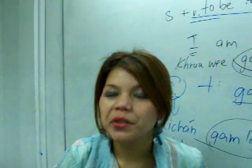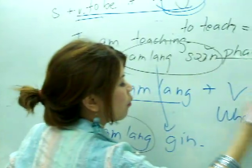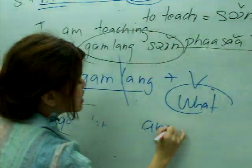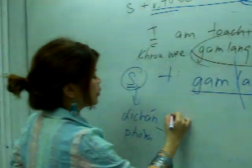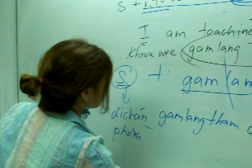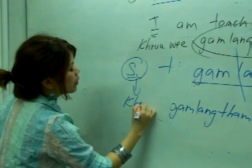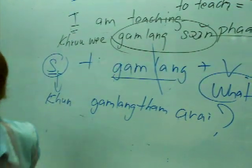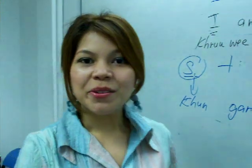Now for a question: 'What are you doing?' คุณ (khun) means 'you.' กำลังทำ means 'are doing.' อะไร (arai) means 'what.' So 'What are you doing?' is: คุณกำลังทำอะไรคะ? (Khun kam lang tham arai ka?)